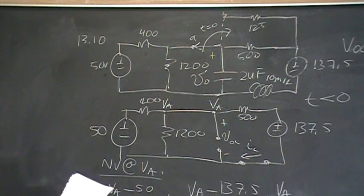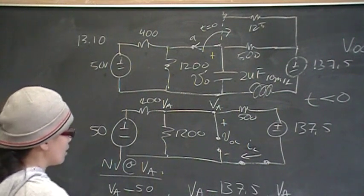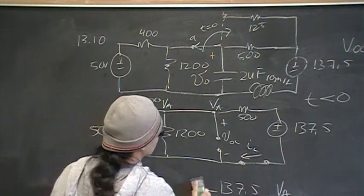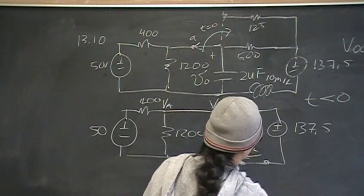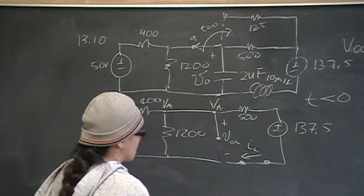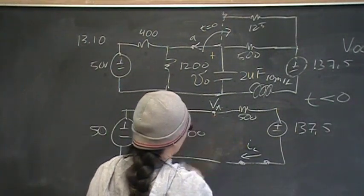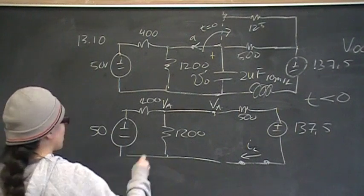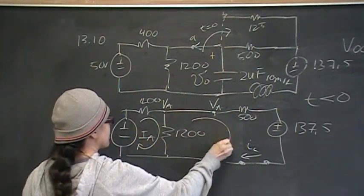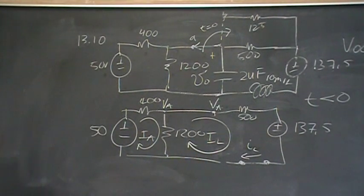That is thing number one that we need. Thing number two that we need is current across the inductor. So, that's this current that I'm looking for. For that, I use mesh currents. And remember, this is an open, so nothing is here. So, I have two meshes. I have some unknown current through here that I'm going to call I sub A. And this here is I sub L. That's my inductor current, and I'm looking for that.